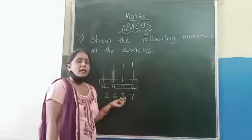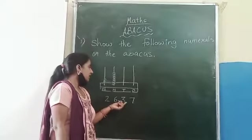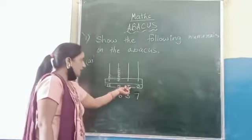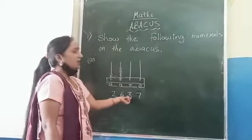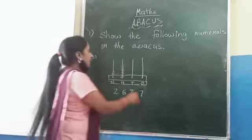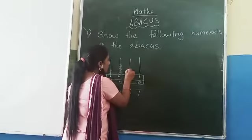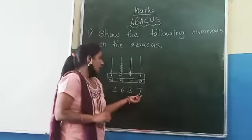Next number is 3. 3 is in the 10 place. Therefore there are 3 beads in the 10 place. 1, 2, 3.